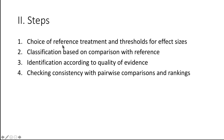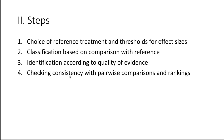There are four steps in the interpretation under the partially contextualized approach. The first is the choice of the reference treatment and the threshold for effect sizes. The second is the classification based on comparisons with the reference — which may be placebo, no active treatment, or a standard treatment. Third is the identification according to the certainty of the evidence, and fourth is checking the consistency with pairwise comparisons and the actual rankings.